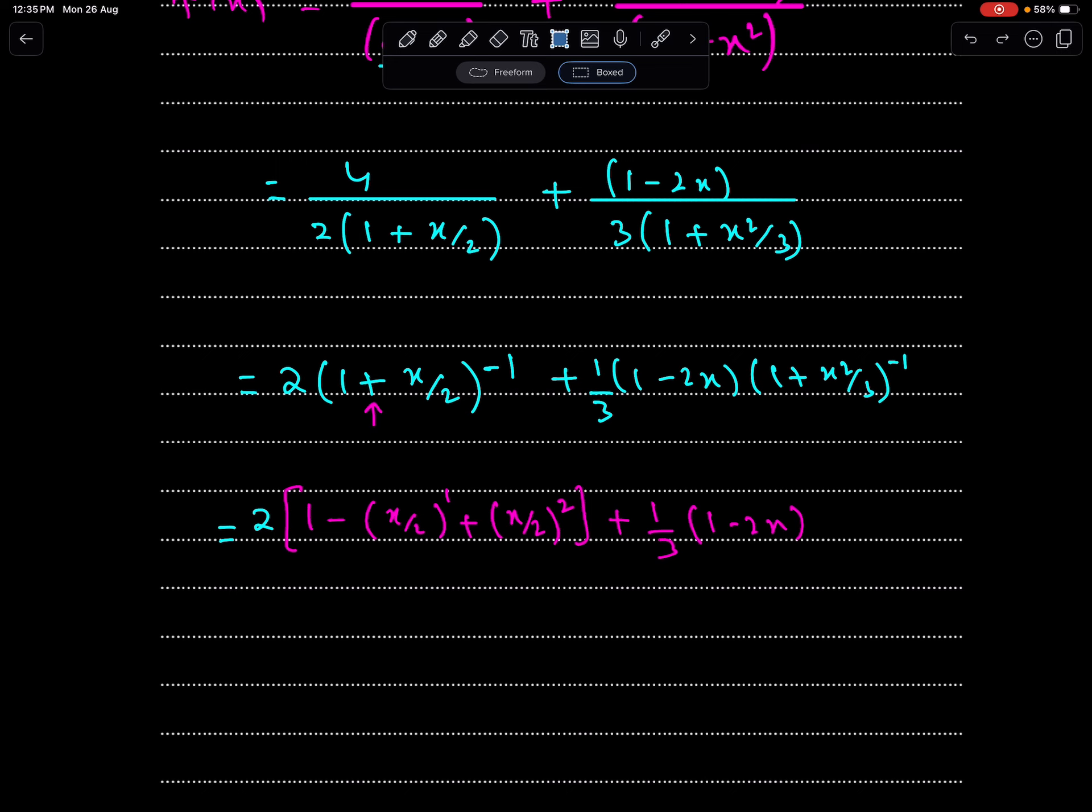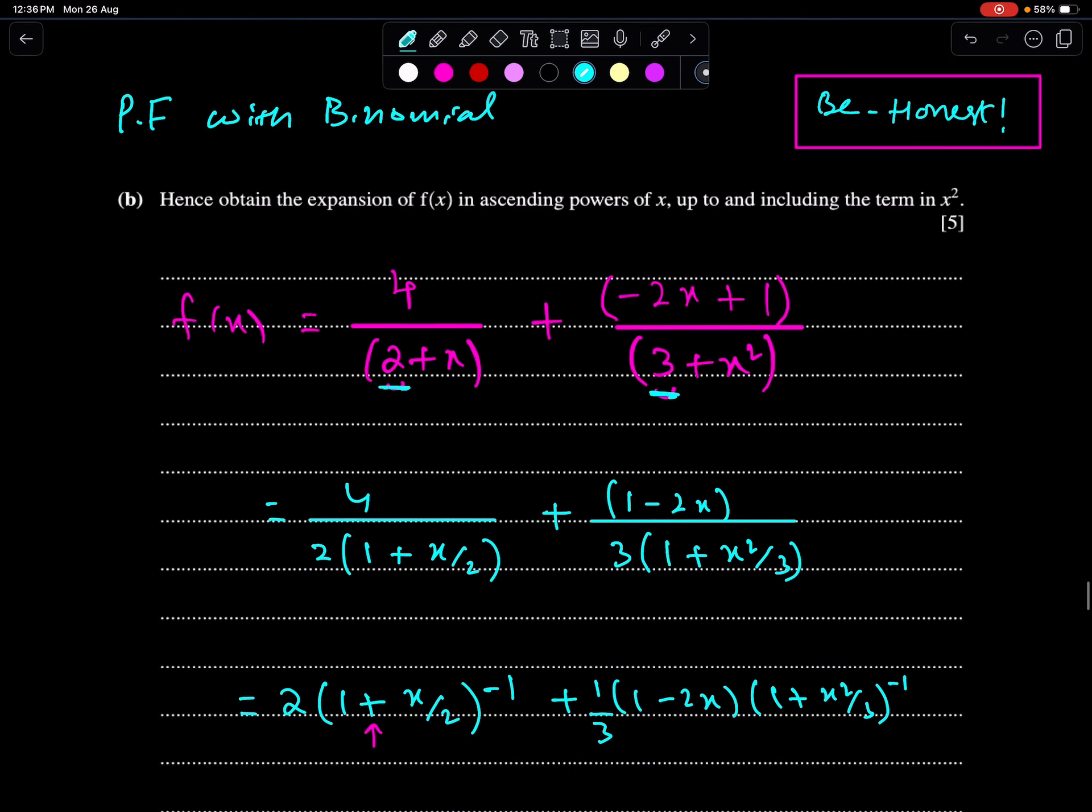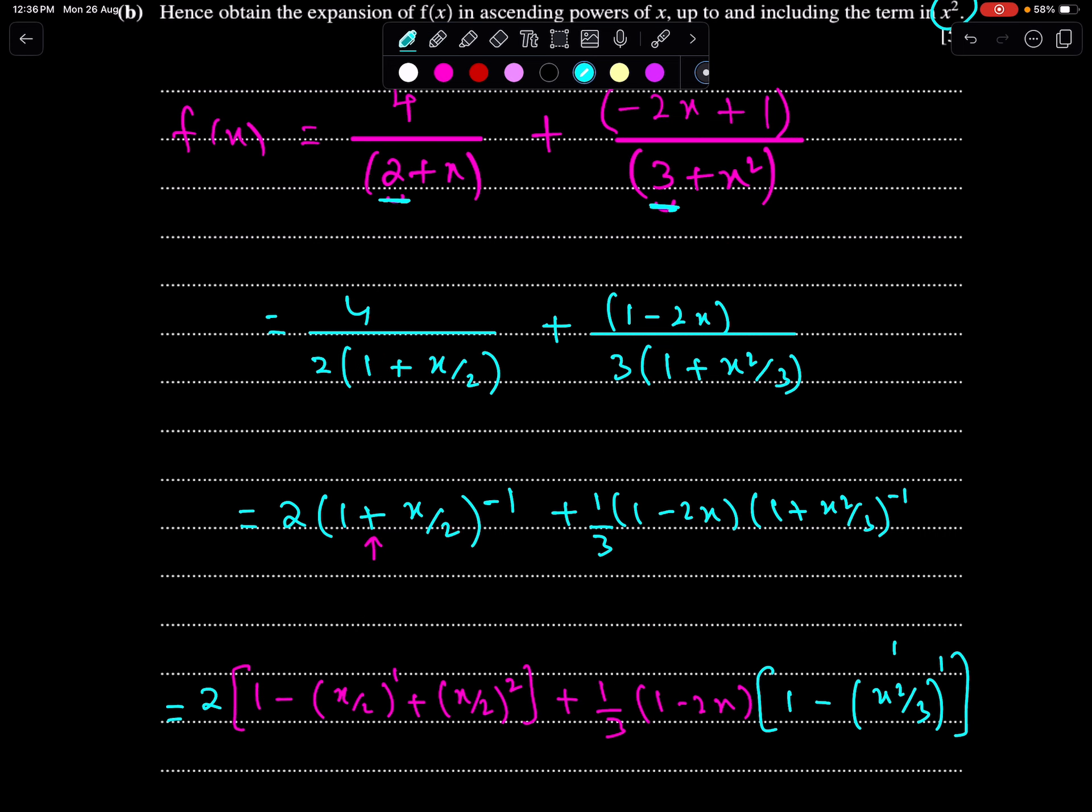1 plus x square upon 3 whole power minus 1. So, 1 minus x square upon 3 power 1, that's it, because we have to expand up to and including the term in x square. So, we have got x square.